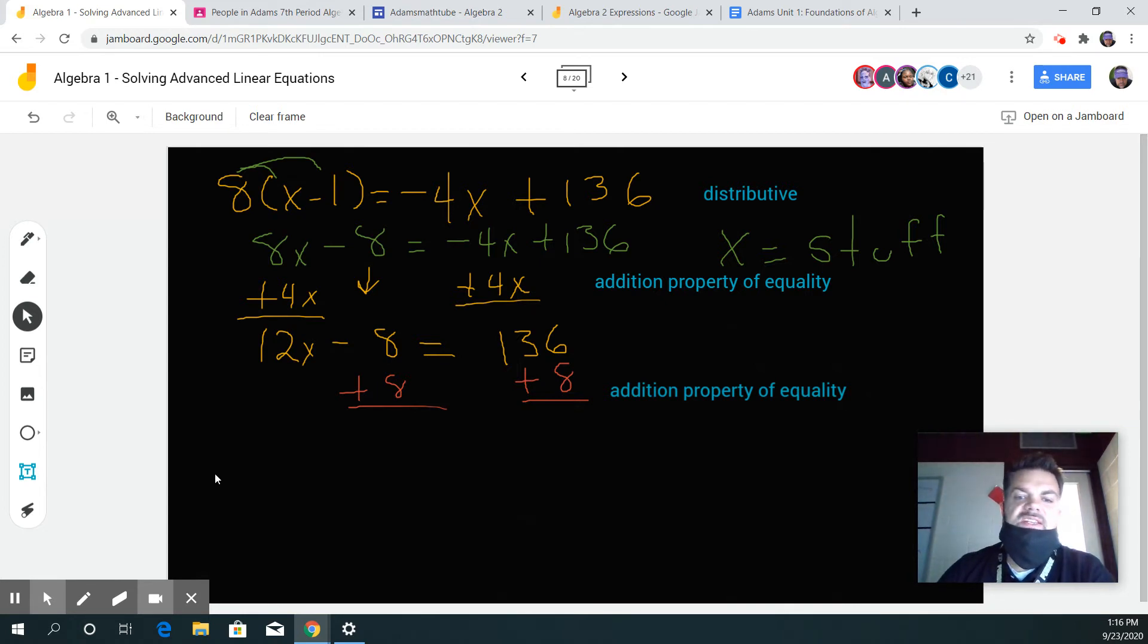Now when I use the addition property of equality, 8 minus 8 is 0. 0 plus 12x is just 12x. And then that's equal to 8 plus 136. So 6 plus 8 is 14. Carry the 1. 1 plus 3 is 4. So it's 144.